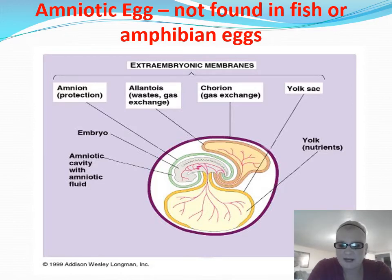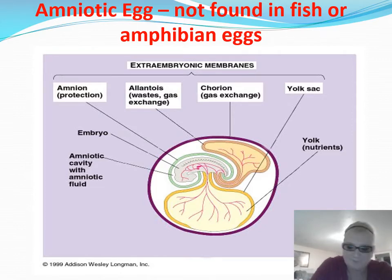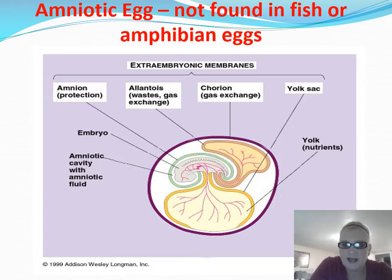which is the source of nutrition for the embryo. The baby has to get nutrition somehow, and that's where the yolk comes from. If you think about a chicken egg, that's the yolk — that's where the baby chicks get their nutrition. We will also see the embryo inside these eggs, and there is a small cavity between the amnion and the embryo where amniotic fluid is found. You need to know what the different layers and structures inside an amniotic egg are responsible for — their function.